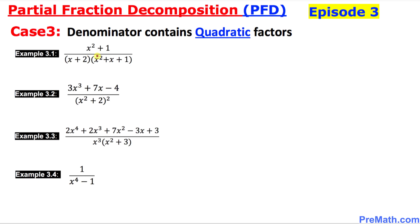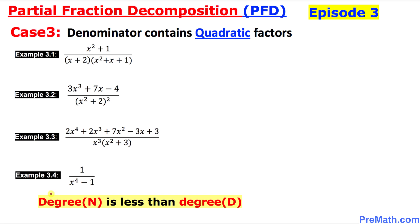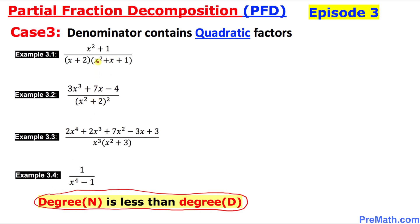In the very first example, this part is quadratic and irreducible. Quadratic means the highest power is 2. Just keep in mind that the degree in the numerator must be less than the degree in the denominator. As you can see in all of these examples, the degree in the numerator is indeed less than the degree in the denominator.